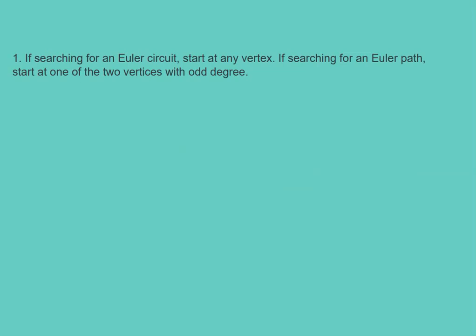If searching for an Euler circuit, start at any vertex. If searching for an Euler path, start at one of the two vertices with an odd degree.